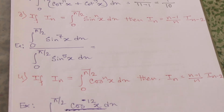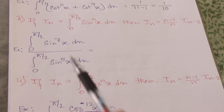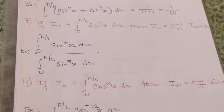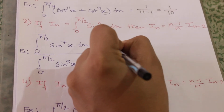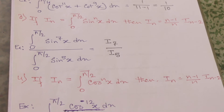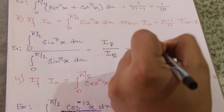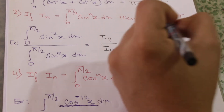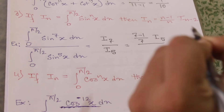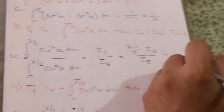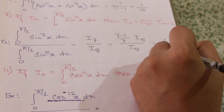Example: [integral from 0 to π/2 of sin^7(x) dx] divided by [integral from 0 to π/2 of sin^5(x) dx]. This equals I_7 / I_5. Using the formula, I_7 = (7-1)/7 · I_5 = 6/7 · I_5. The I_5 terms cancel, giving a final answer of 6/7.